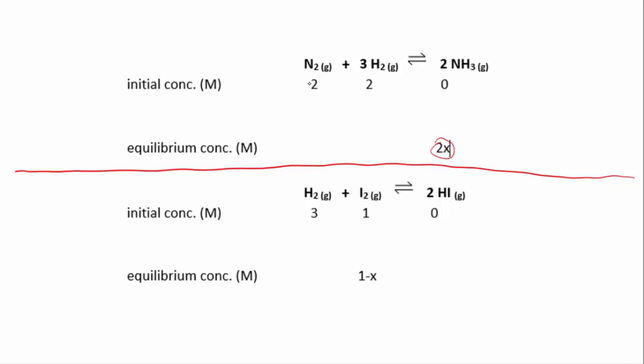So we have two moles per liter of nitrogen and two moles per liter of hydrogen and no ammonia to start off with, and we're told that when it reaches equilibrium we have 2x moles per liter of ammonia.